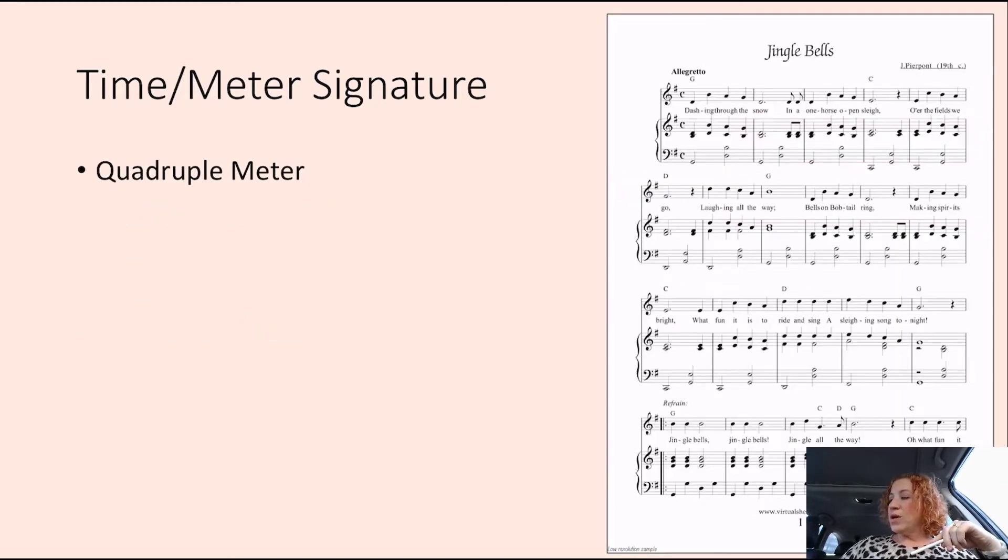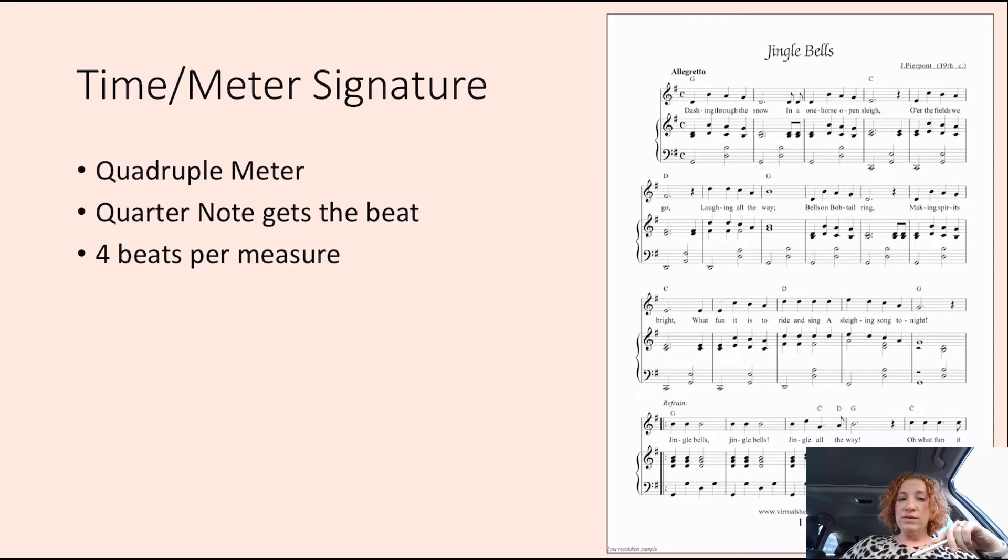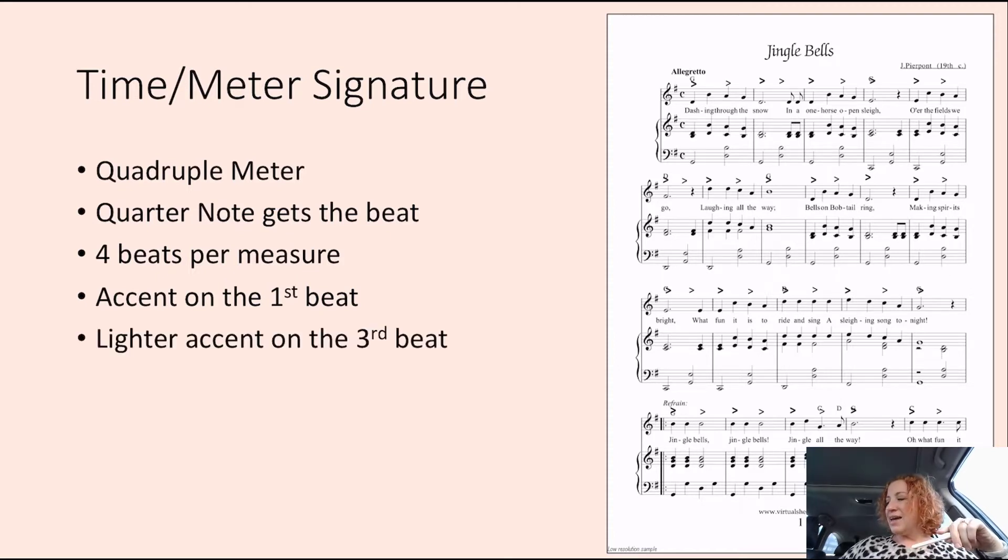So, if we go into quadruple meter, what note is going to get the beat? Quarter note gets the beat. 4 beats per measure. And the accent is on the first beat. And there's a lighter accent on the third beat. 1, 2, 3, 4, 1, 2, 3, 4, 1, 2, 3, 4. So, there's a little bit of a lighter accent on the third beat. So, sometimes it can be hard to tell between duple meter and quadruple meter. But, I have faith in you guys.